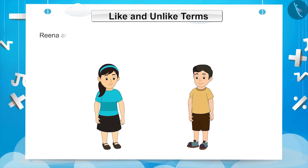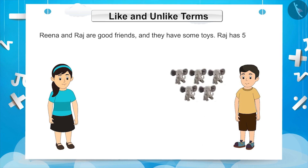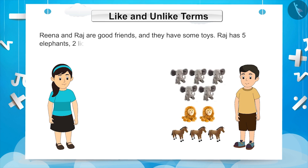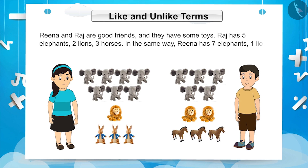Let us now understand about like and unlike terms. Rina and Raj are two good friends and they have some toys. Raj has a total of 5 elephants, 2 lions, and 3 horses. Similarly, Rina has 7 elephants, 1 lion, and 3 rabbits.